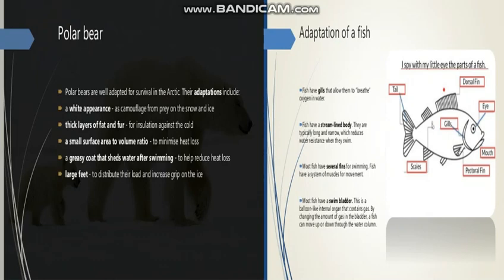Animals that live in very cold places, like polar bears, seals and whales, have thick fur on their bodies. They also have a thick layer of fat under their skin which keeps them warm.